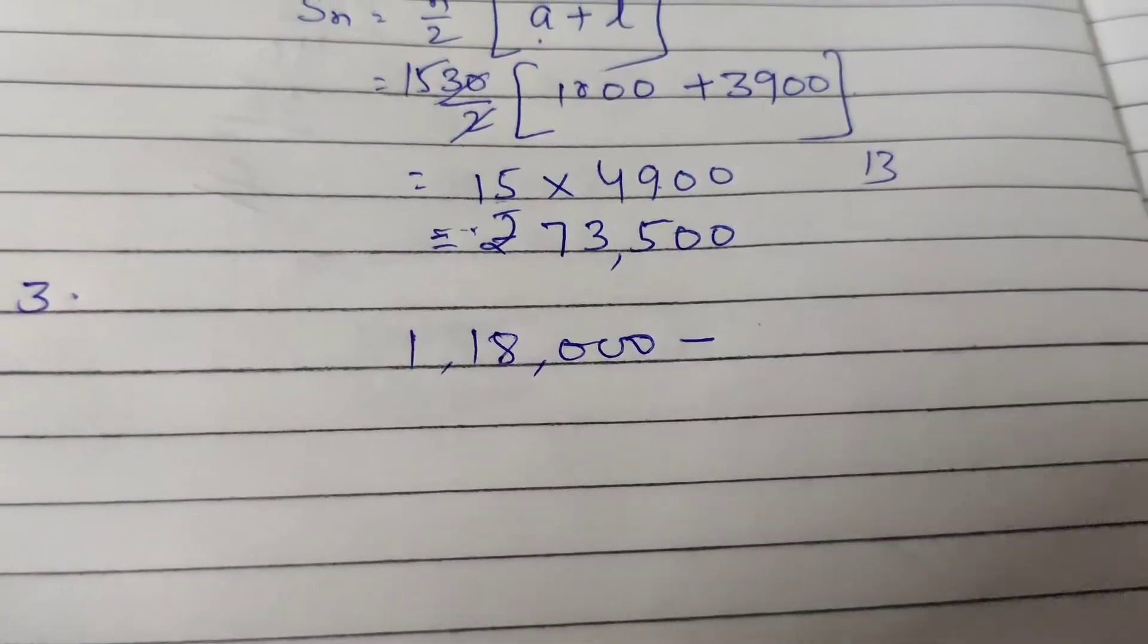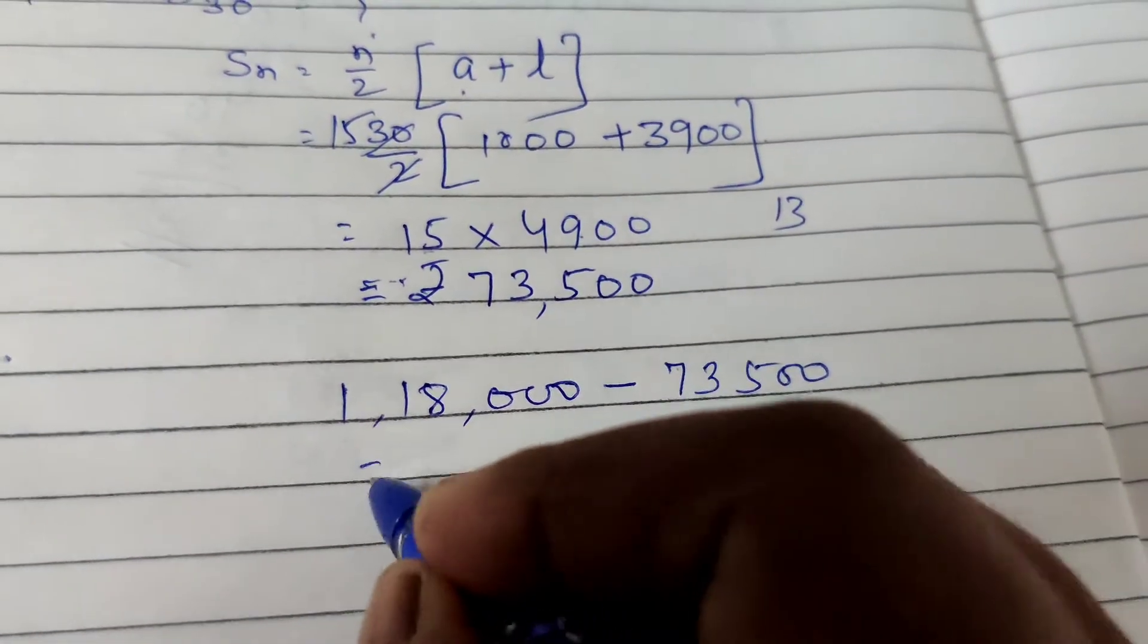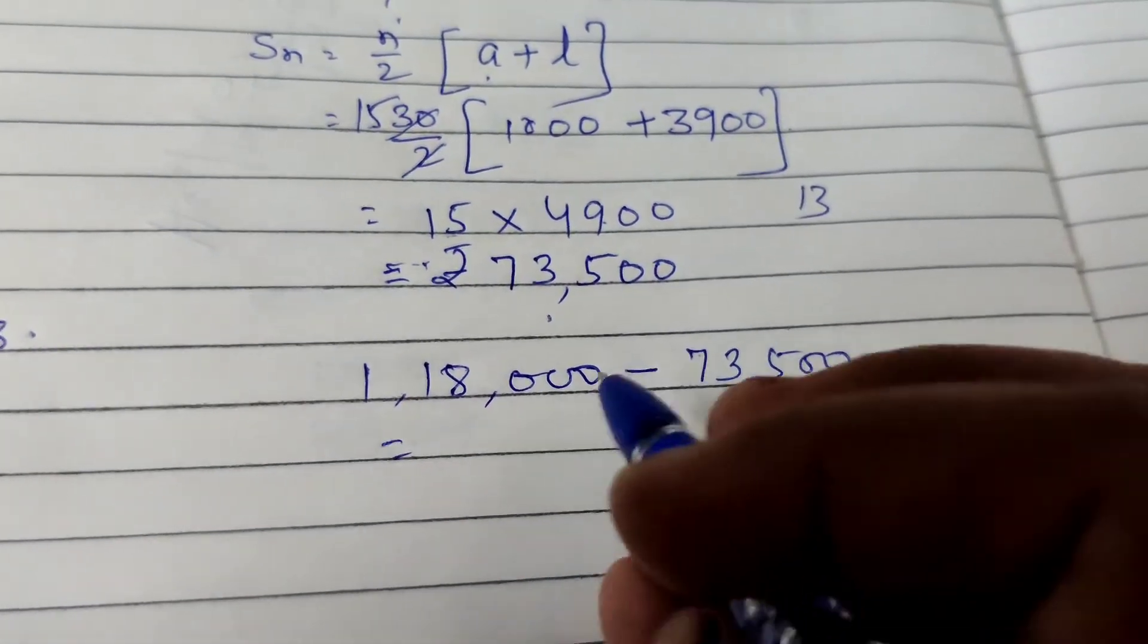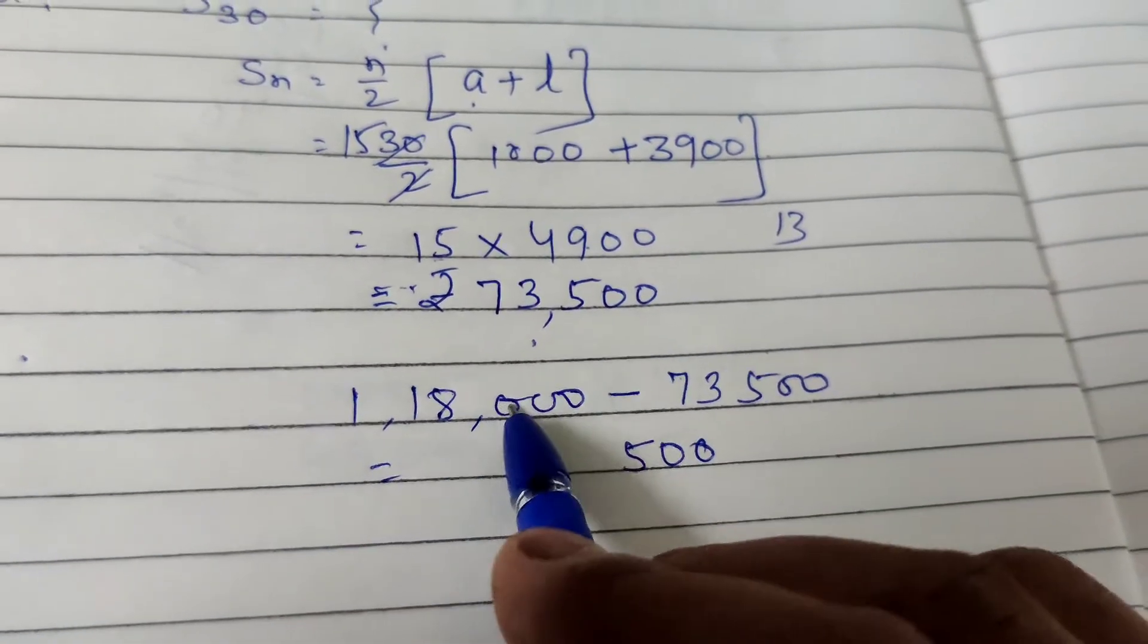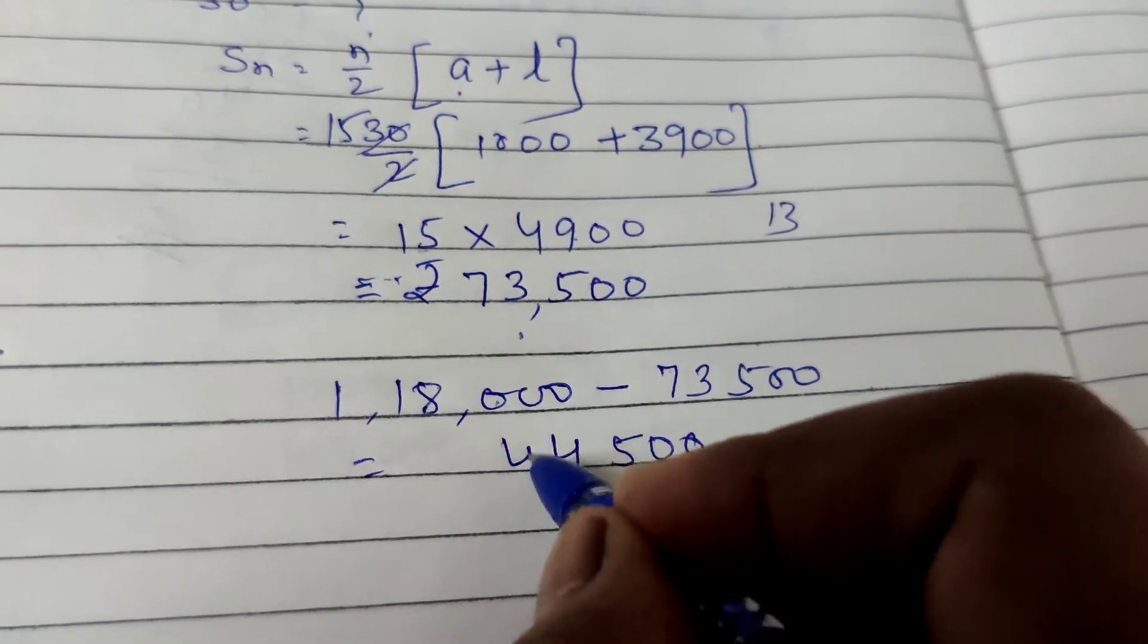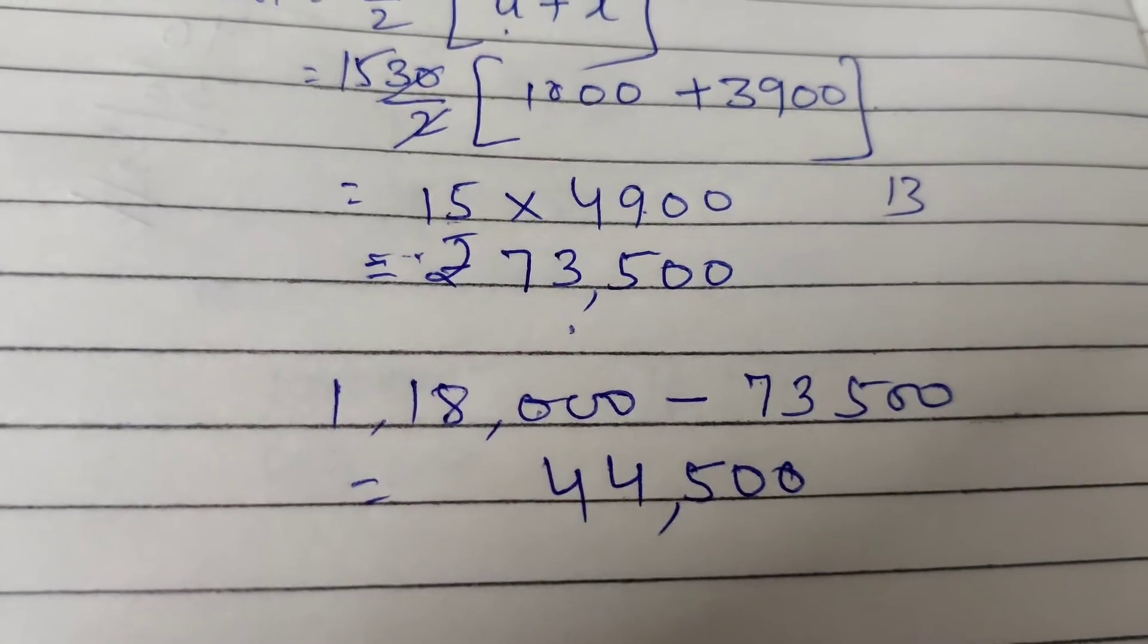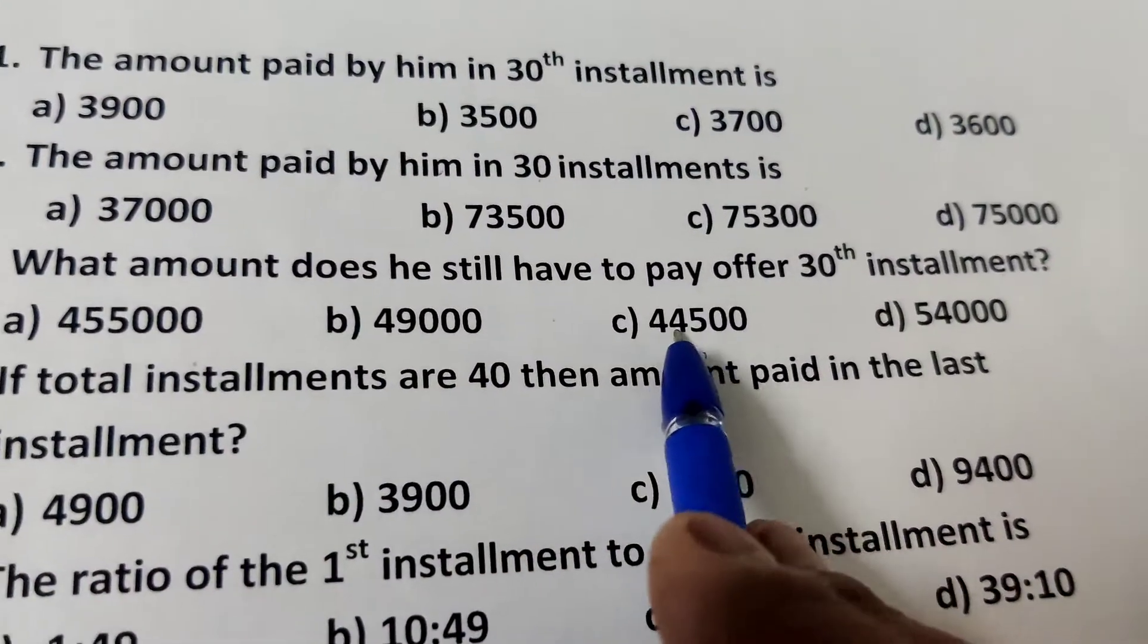Subtract 73,500. This much has been paid in 30 installments total. This much remains. Subtract this. 7 minus 3 is 4. 44,500. Rest amount. Answer is 45,500.